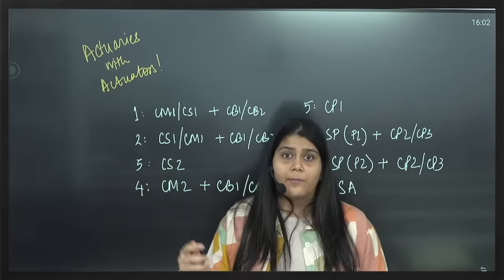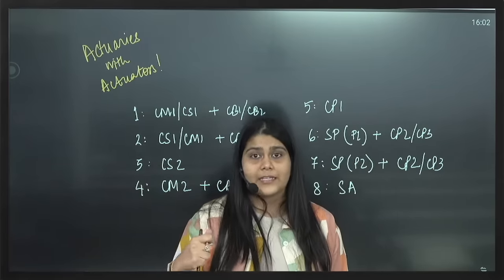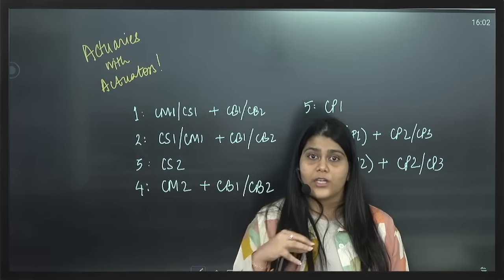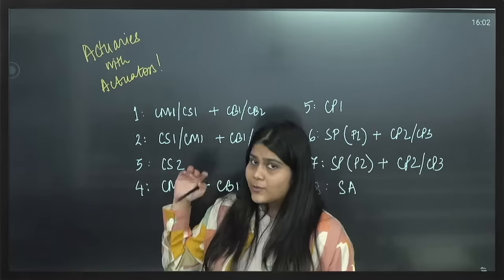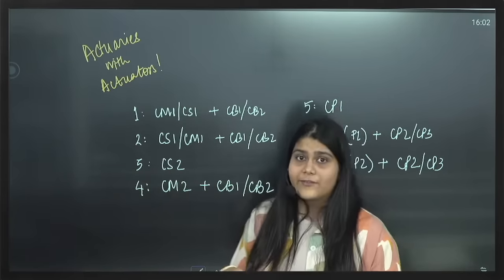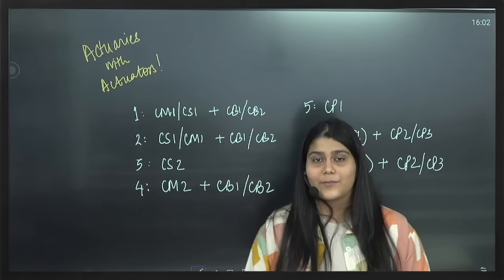CM1 is all about basic actuarial mathematics, we have discounting and we have an insight into the insurance principles. CS1 is basic actuarial statistics, CB1 is business finance and CB2 is business economics.